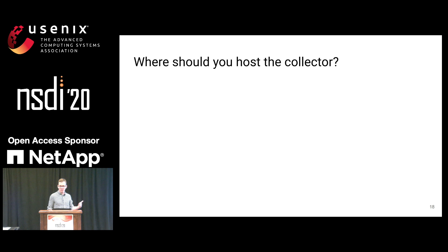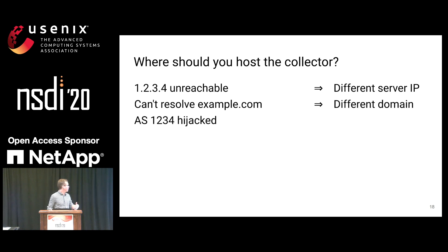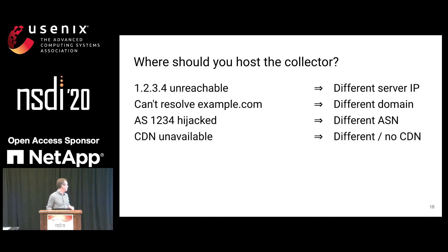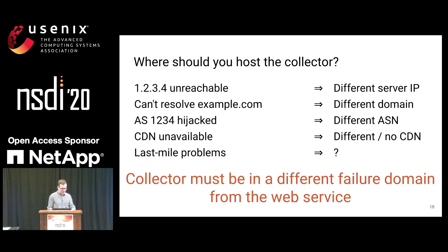One of the key things those headers contain is a list of URLs — these are the collectors you should try to send NEL reports to. If you want to detect that the IP address of your service has become unreachable, you need to host the collector on a different server IP address. If you want to detect that your domain name isn't working, you need to host the collector on a different domain. If you want to detect that your autonomous system is being hijacked, you need to host the collector in a different AS. Similarly, if you're using a CDN, you need a different CDN or no CDN at all. The upshot is that your collectors need to be hosted in places that are a different failure domain from where your main web service is hosted.